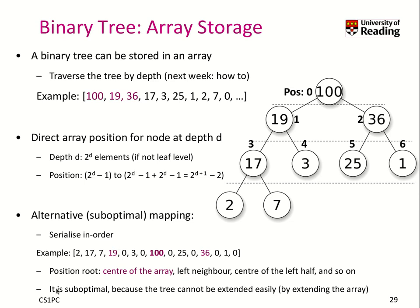In-order serialization is a little suboptimal because you cannot extend the tree easily by extending the array. With the level-order mapping, you can always add a new level of depth, and then basically you add more elements at the end of the array.